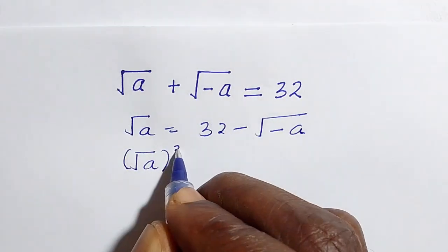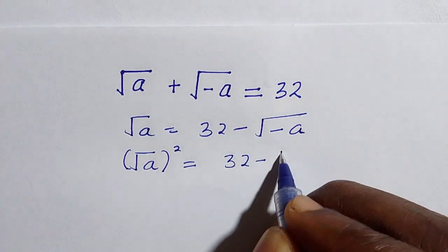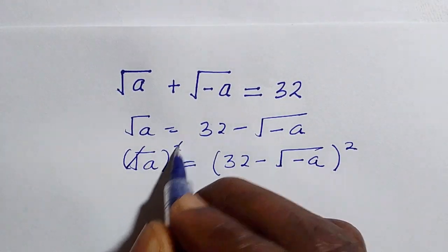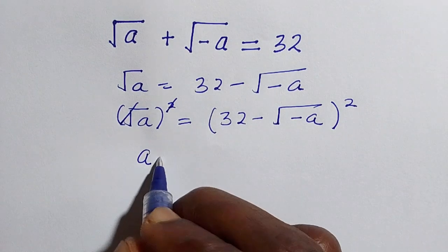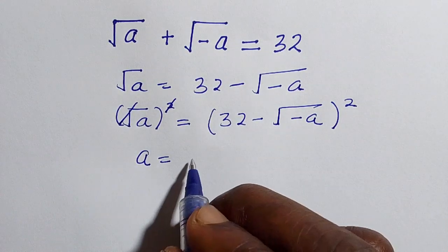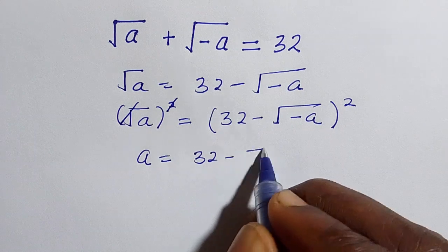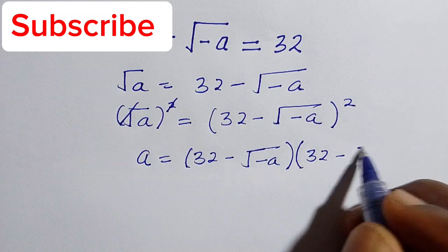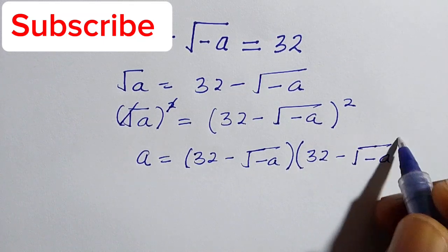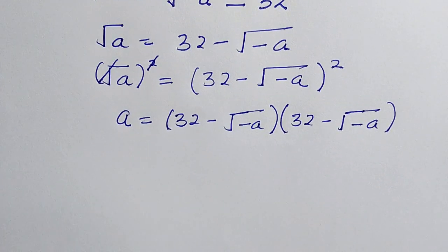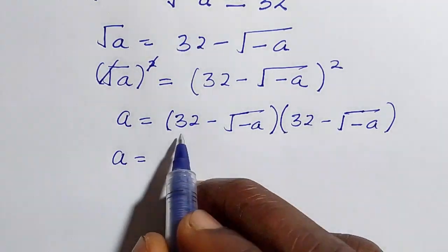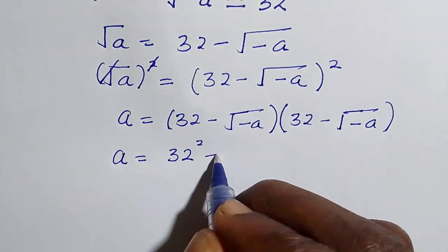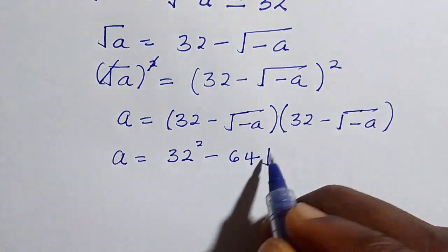The next step is we take the square of both sides, so we have root a raised to the power of 2 equals 32 minus square root of minus a, all raised to the power of 2. The square and the square root cancel, so we have a equals the expansion of 32 minus square root of minus a, in open bracket 32 minus square root of minus a.